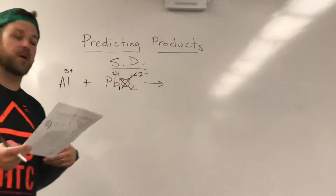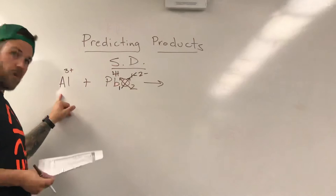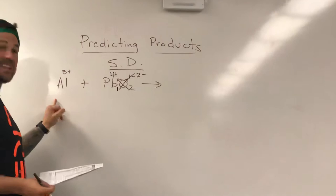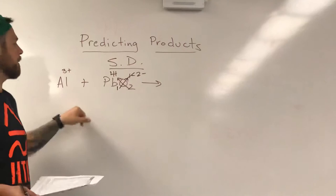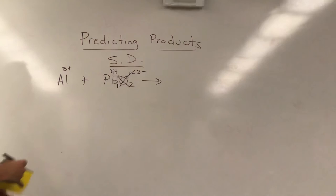So lead is weaker, aluminum is stronger, so therefore it can bump it out. If it was the other way—if we had lead right here and aluminum right here—that would not happen. We would just write 'no reaction' on the end. But because aluminum is stronger, we can go ahead and cross. We're gonna do exactly the same stuff we've done before.